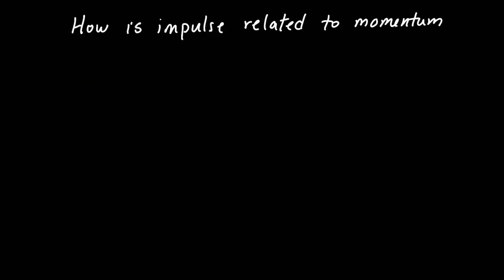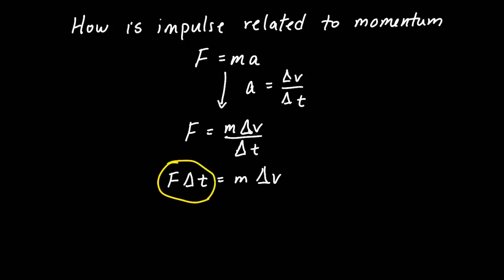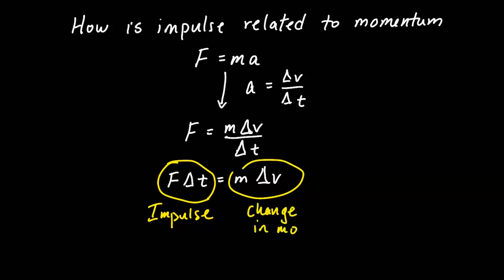Next, let's look at how impulse is related to momentum. Starting with Newton's second law: the net force equals ma. Acceleration by definition is the change in velocity over the change in time. Substituting, we get F equals m delta v over delta t. Moving delta t to the left-hand side gives us F delta t equals m delta v. The left-hand side is impulse, and the right-hand side is change in momentum. This is also referred to as the impulse-momentum theorem.